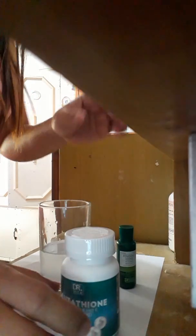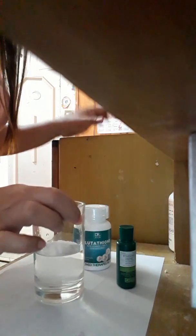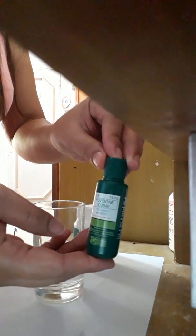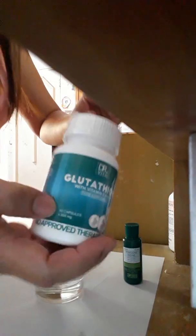So the things we need are the following. We have water in the glass, Povidone iodine solution, and of course some powder of this product. And a spoon for stirring.